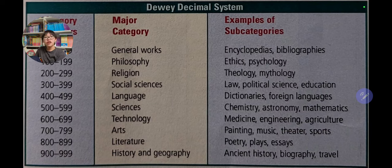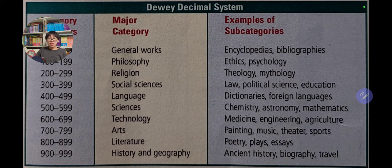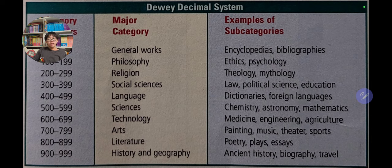From 300 to 399, it's all about social studies — like law, political science, and educational topics. From 400 to 499, numbers represent language, which includes dictionaries and foreign language. And from 500 to 599 are the sciences, which include chemistry, astronomy, and mathematics.